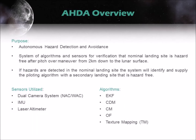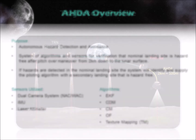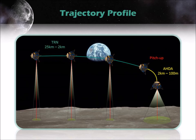Hazard detection and avoidance is the process by which images of the lunar surface are analyzed to identify and classify potential hazards during the final phase of descent. The imagery is processed using a series of algorithms that can detect discontinuities, craters, rocks, and areas with excessive slope. This graphic shows which systems are active during the different phases of descent.